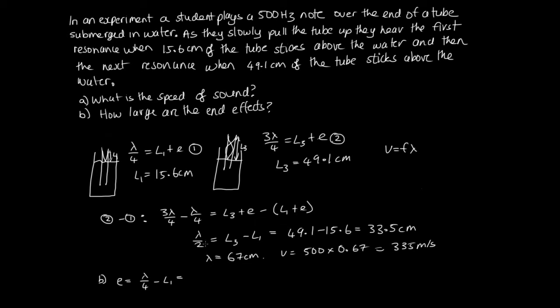Lambda over 4, well we've got lambda over 2 is 33.5, so that is 0.335 on 2 minus L1 which is 15.6 or 0.156 if we're going to deal with meters. And this is equal to 0.0115, and that's in meters. Or we could write it in centimeters, so that's 1.15 centimeters is another way to express that end effect.